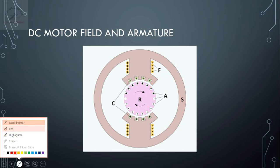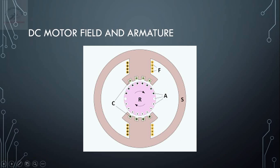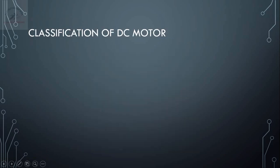Classifying based on field and armature windings: the first type is called a separately excited motor. If the field and armature windings are run from an independent supply, with no connection between armature and field — using a separate supply for the field and a separate supply for the armature — this particular motor is called a separately excited motor.